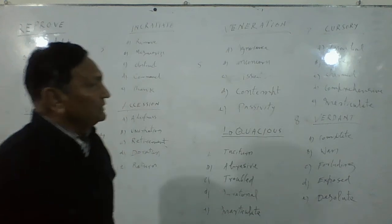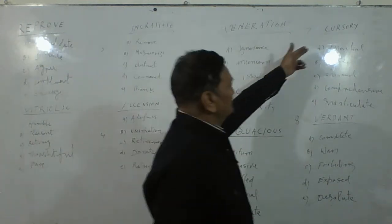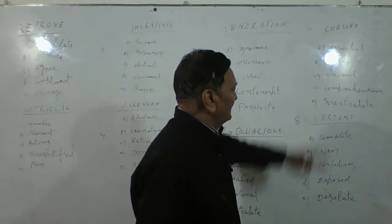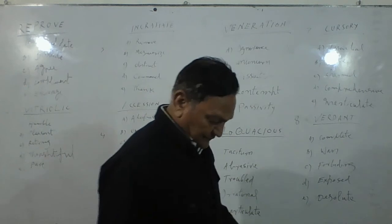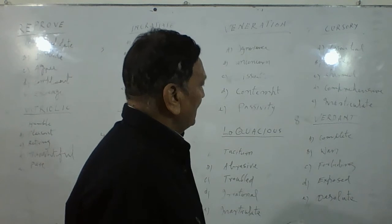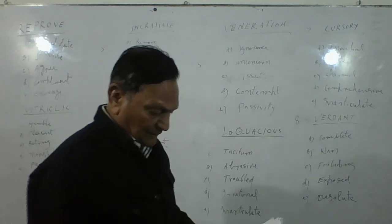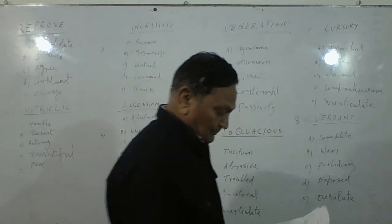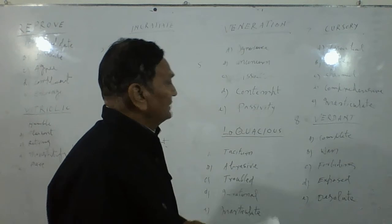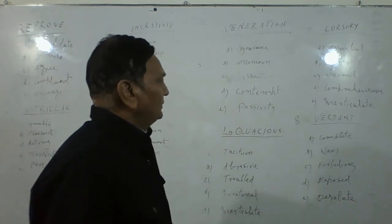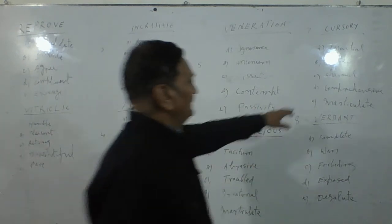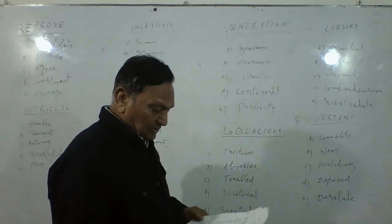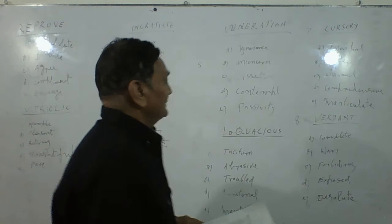The capitalized word is CURSORY. Cursory is also an adjective and we have five options: A: Taciturn, B: Polite, C: Charm, D: Comprehensive, E: Inarticulate. Cursory means brief examination — or in other words, brief. Comprehensive means to communicate in detail. So the opposite of cursory, which means brief, is D: Comprehensive.